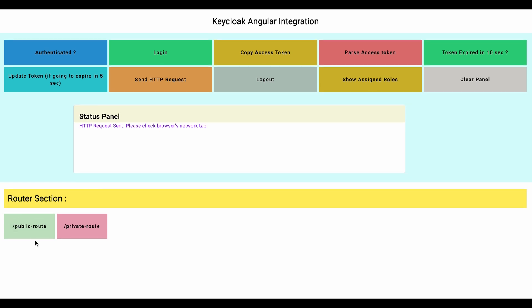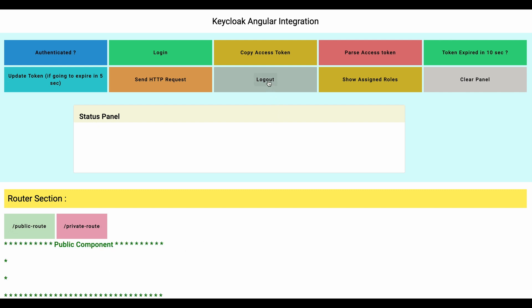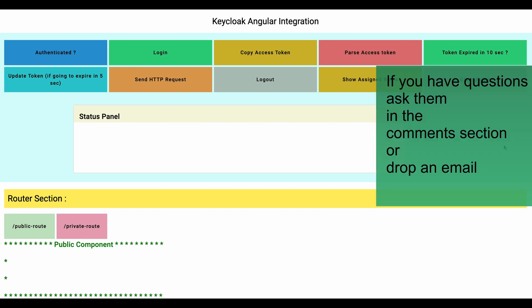In the router section, I visit the public route — that is accessible to everyone. I then visit the private route — it is also accessible since the user is authenticated. Now I click logout — the user is logged out. When I try to access the private route, it does not allow me in. That's what I wanted to demonstrate. I believe you now have a better understanding of how to secure an Angular application using Keycloak identity and access management. If you have any questions, let me know — thank you very much.